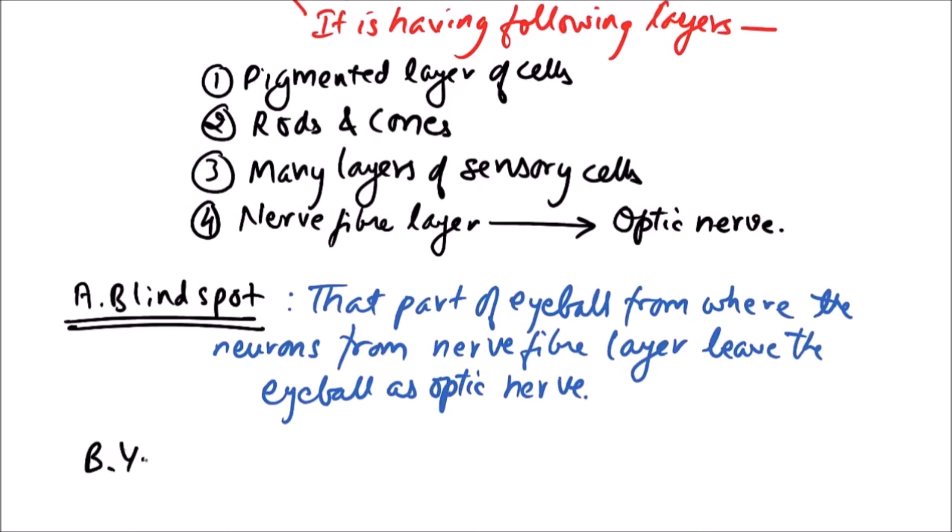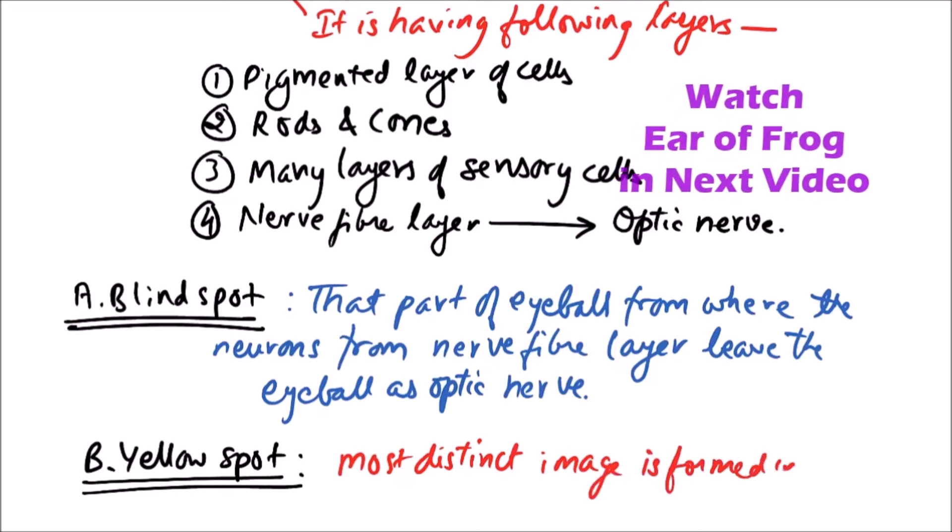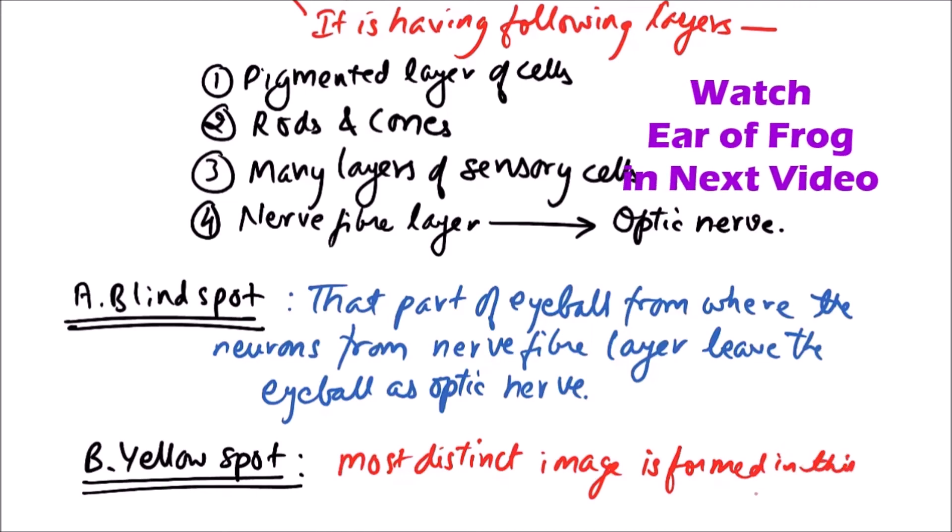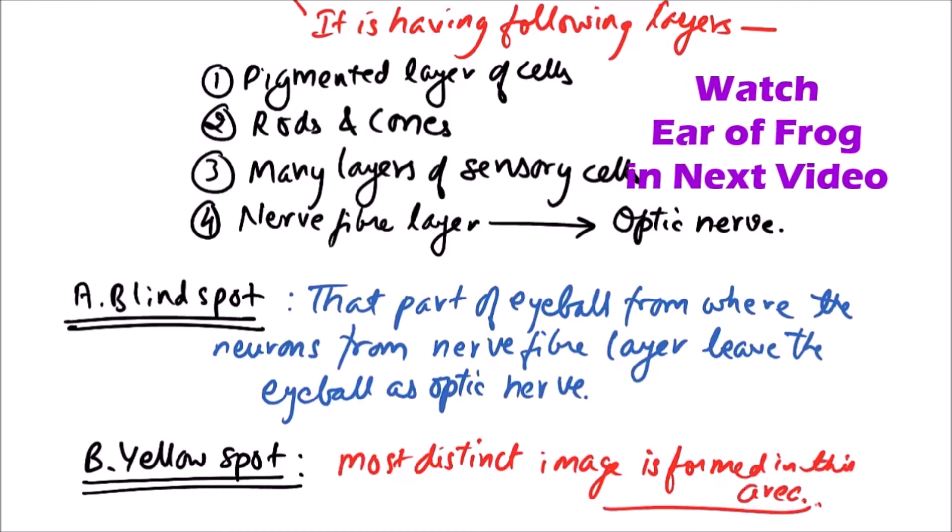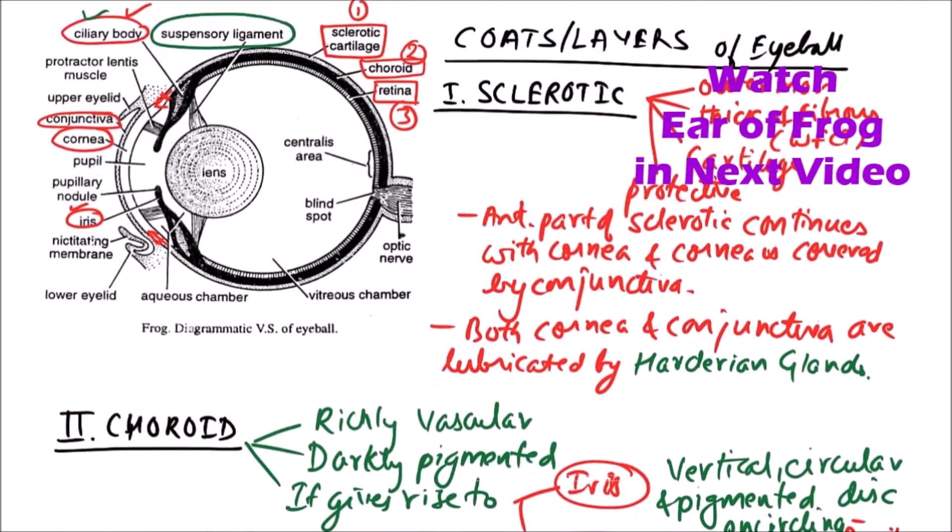Another important area in retina is yellow spot. What is this yellow spot? It is the most sensitive part of retina and it forms the most distinct image. Most distinct image is formed in this area. So this is all about the eyeball of frog.